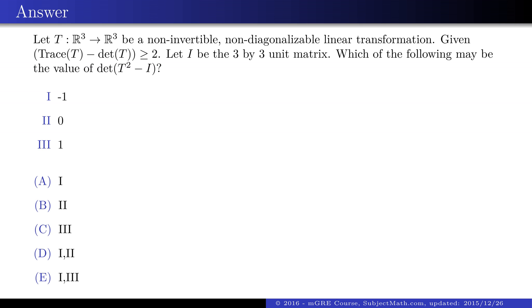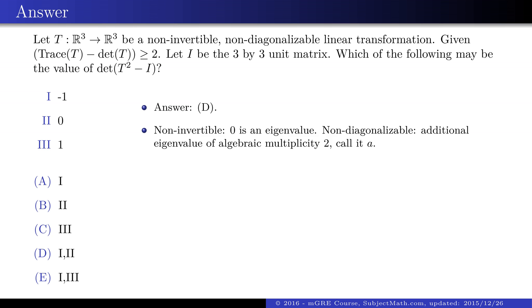The answer is D. We look at the eigenvalues of T. Since it is non-invertible, 0 is an eigenvalue. The other two eigenvalues must be the same, otherwise the transformation would be diagonalizable.